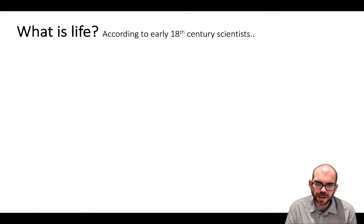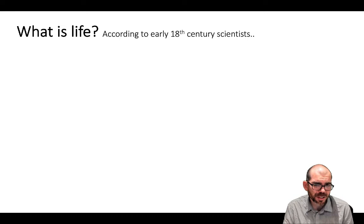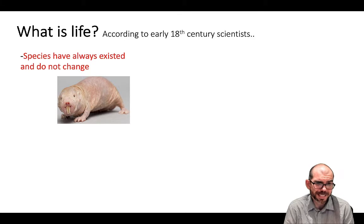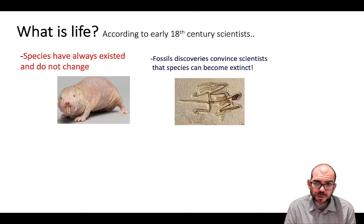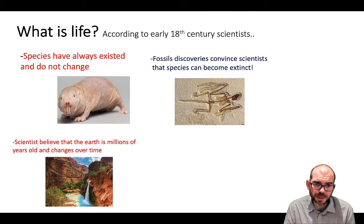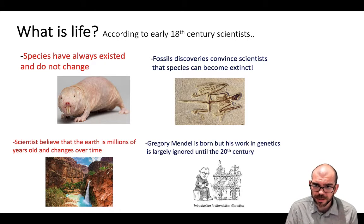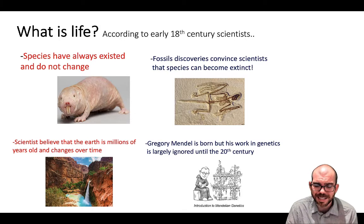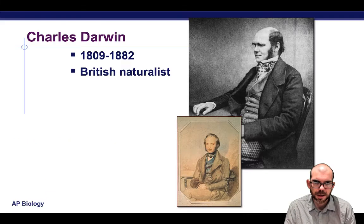Before we look at the discovery of natural selection, we want to know what scientists thought at the time. According to 18th century scientists, species have always existed and don't change through time. Fossil discoveries started to slowly convince scientists that maybe species can go extinct. Before these discoveries, people thought that a fossil was just of a species we hadn't found alive yet. Scientists believed that Earth is millions of years old and could change over time. Gregor Mendel was born during this time, but his work was largely ignored until the 20th century, so from the perspective of natural selection, we're not thinking in terms of genetics until later.